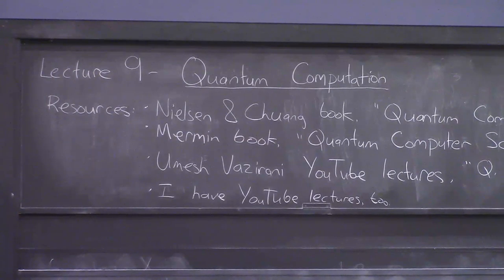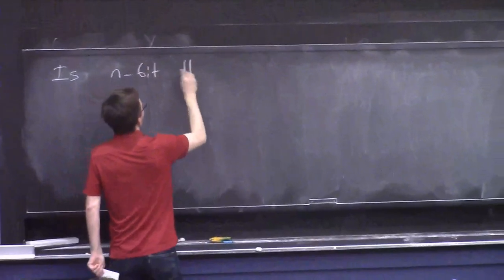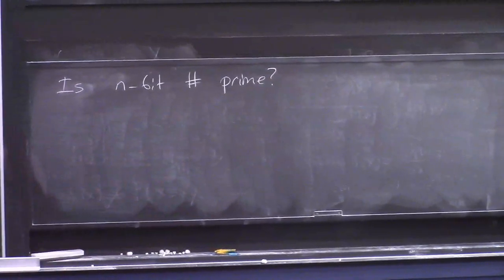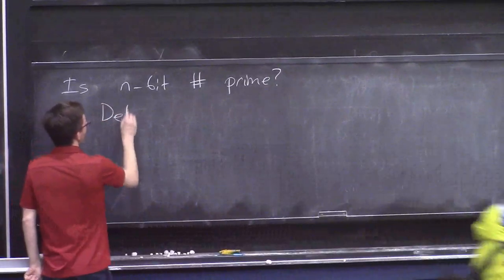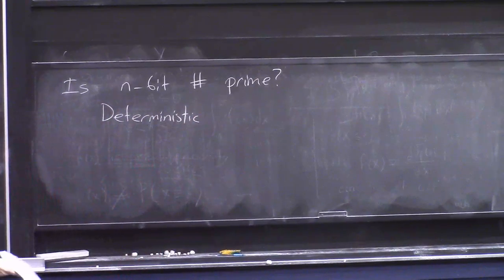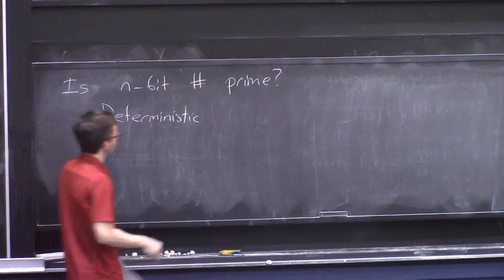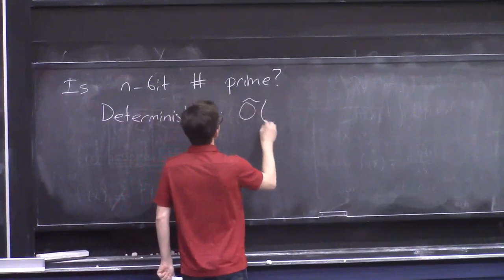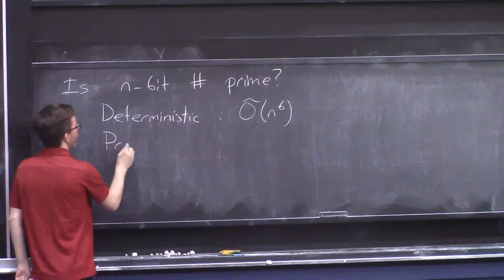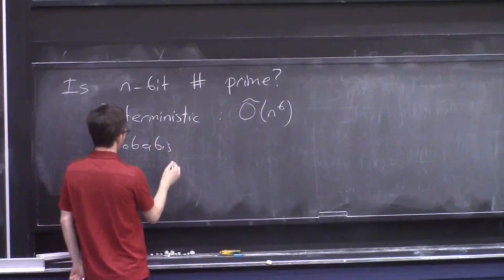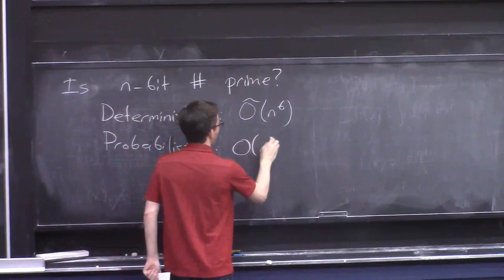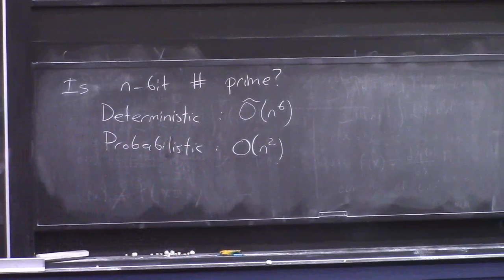So, let me give you some examples. Here's a basic task. You're given an n-bit number, and you want to know if it's a prime number or not. We talked about this a little bit before, in an earlier lecture. The best-known deterministic algorithm for this problem, well, no deterministic efficient algorithm was known until 2002. But since then, the best one known takes something like n to the sixth steps, which is quite terrible. But the fastest-known probabilistic algorithm is much better. It takes only quadratic time.